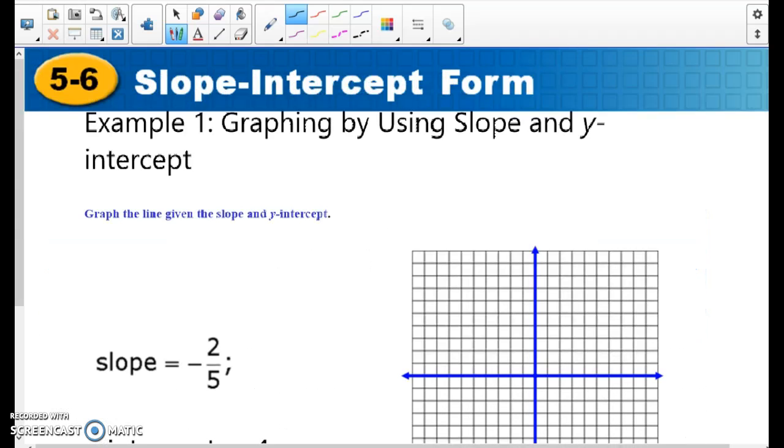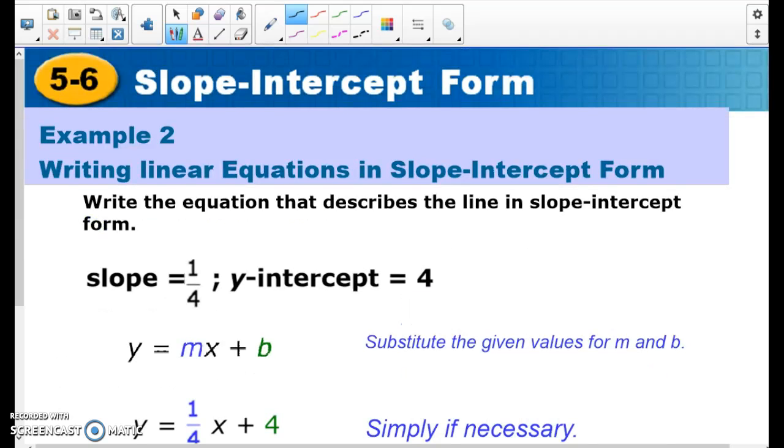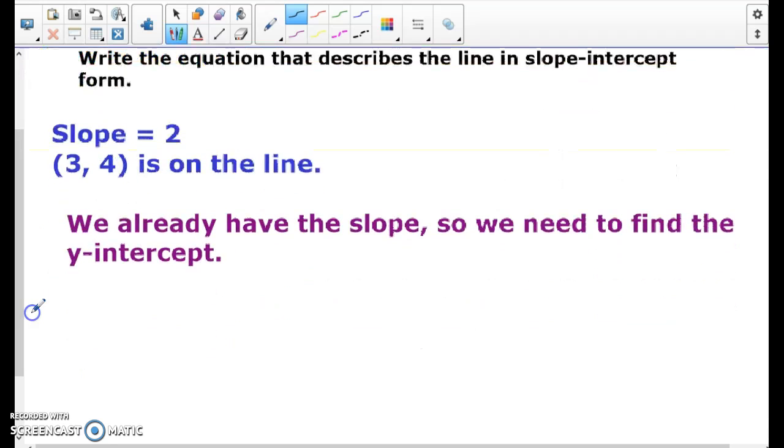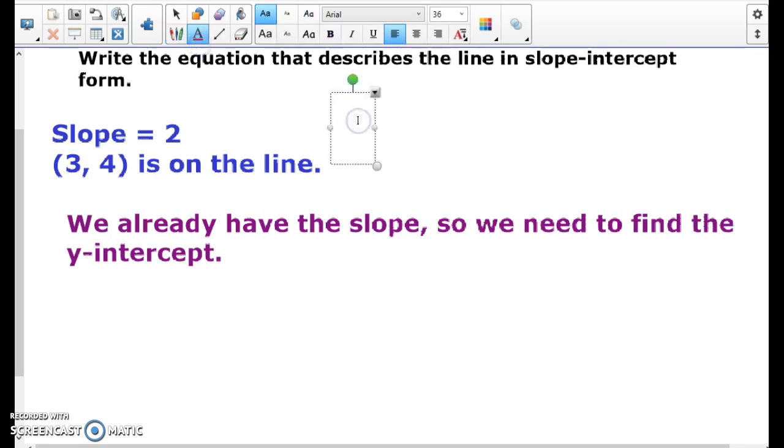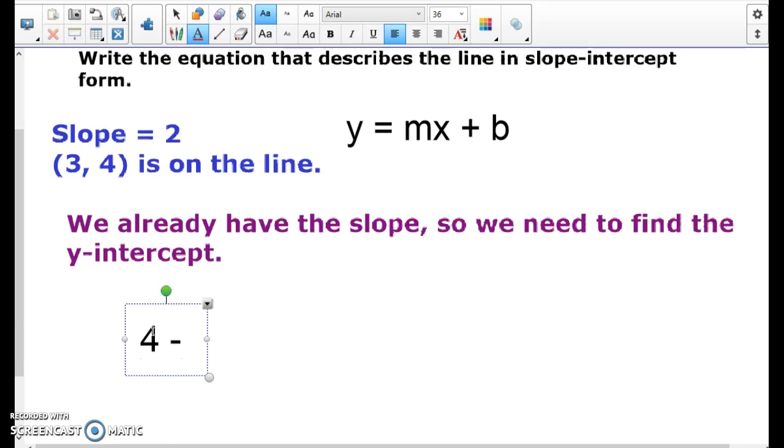The other part of today's lesson is going to be finding the y-intercept when I have the slope. So what is my y-intercept going to be? Remember, I'm looking at y equals mx plus b. I know my m is 2 because that's my slope, and it gives me two points. So there's my x, there's my y. So I'm left with 4 equals 2 times 3 plus b. I don't know what my b is, but I'm going to solve for it right here.